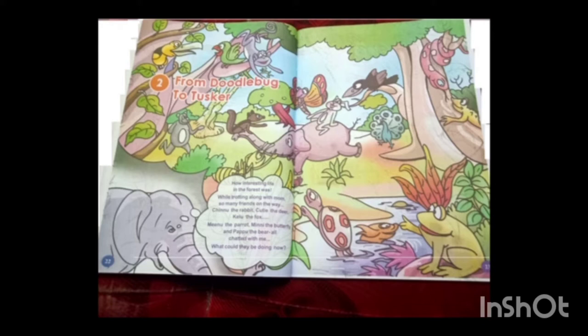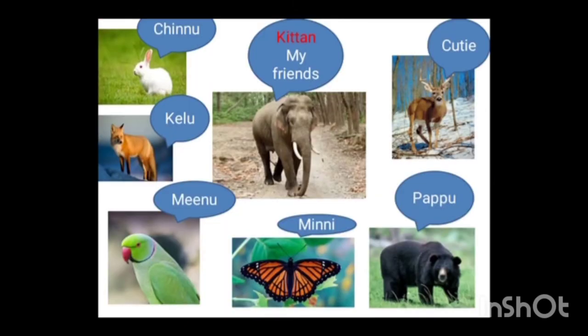Now let us see what he is thinking. How interesting life in the forest was, while trotting along with mum. So many friends on the way. We can see his friends on the screen: Chinnu the rabbit, Kelo the fox, Minnu the parrot, Minnie the butterfly, Papu the bear, Cutie the deer.